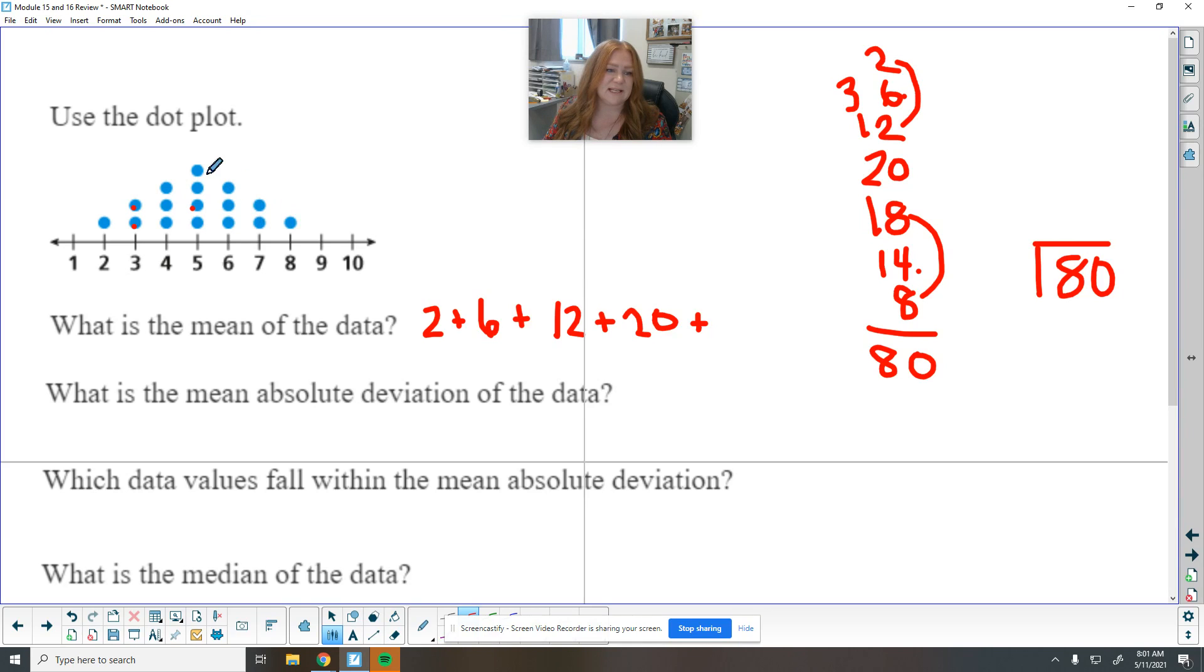Now we've got to divide by all of the dots, which is 1, 2, 3, 4, 5, 6, 7, 8, 9, 10, 11, 12, 13, 14, 15, 16 dots. So 16, 32, 48. 16 more plus 48 is 64. And then what am I adding on? 16 makes 80. Perfect. It goes in there exactly five times. So my mean is five.